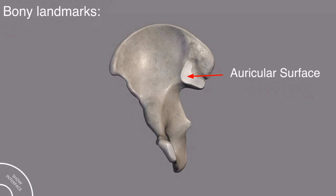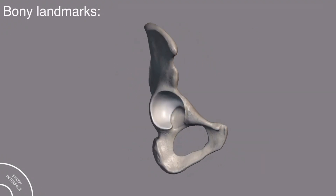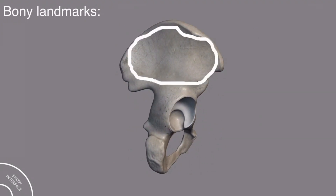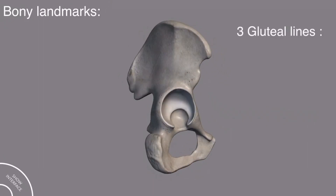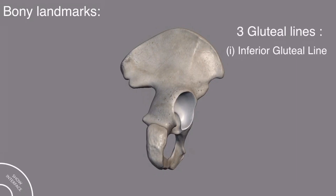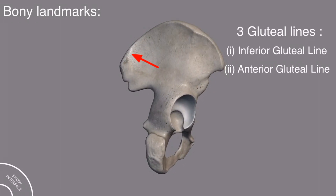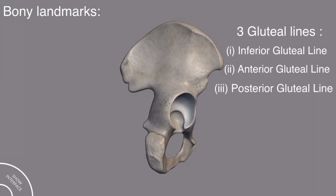This tuberosity is called the iliac tuberosity, and this is called the auricular surface through which it articulates with the sacrum bone. This is called the symphysial surface, and through this symphysial surface, it is attached to the pubic symphysis. Now let's come to the other side of the hip bone. This whole surface is called the gluteal surface, and on the gluteal surface, we have three gluteal lines. This line is called the inferior gluteal line, this line is called the anterior gluteal line, and on the posterior side, this line is called the posterior gluteal line.